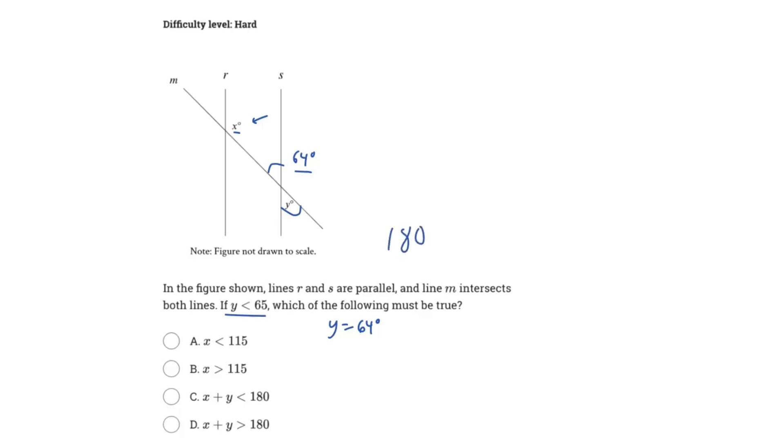So you get 180 minus 64, which gives us 116 degrees. So interesting note here is that 116 is greater than 115. So that does not add up with A and therefore A is wrong.